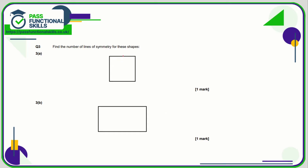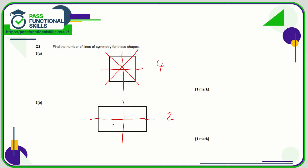Question 3a: assuming it's a square, that gives one, two, three, four lines of symmetry. The rectangle, on the other hand, only has two lines of symmetry — the diagonal ones won't work. You can get a rectangular piece of paper and try folding it corner to corner — it won't work.